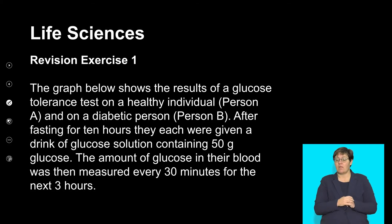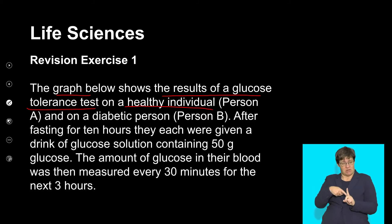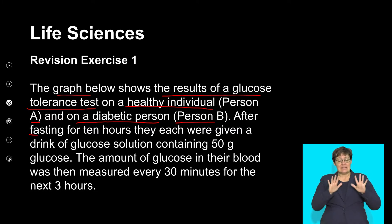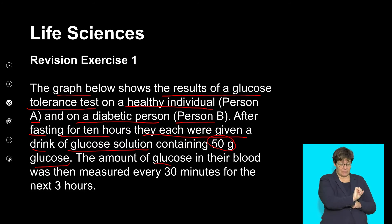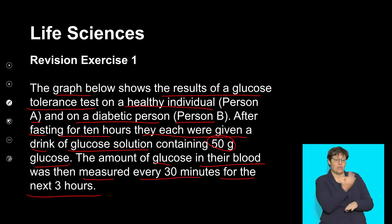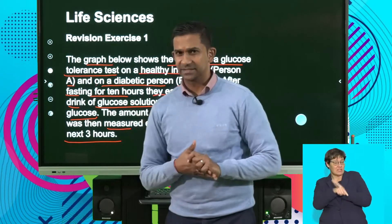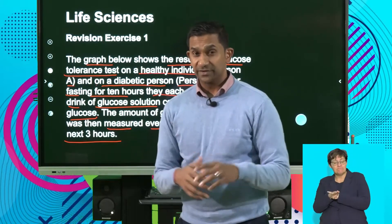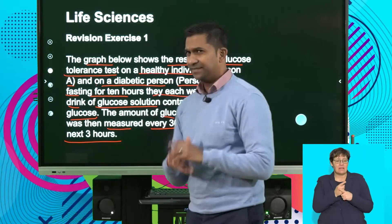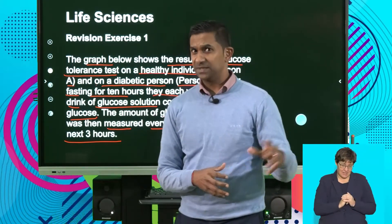The question reads: the graph below shows the results of a glucose tolerance test on a healthy individual, person A, and on a diabetic person, person B. After fasting for 10 hours, they were each given a drink of glucose solution containing 50 grams of glucose. The amount of glucose in their blood was then measured every 30 minutes for the next three hours. It's important to understand that individuals going in for a glucose tolerance test have to undergo a period of fasting.